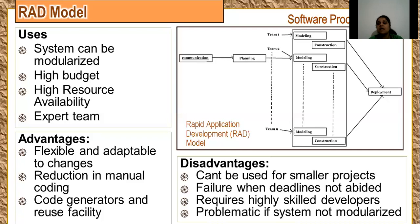The RAD model can be used where the system can be modularized or broken into small sub-tasks; if that is not possible, this model cannot be used. It also requires a very high budget because dividing tasks reduces delivery time. High resource availability is needed — tasks happen in parallel, requiring more infrastructure, manpower, and cost. Last, you need an expert, self-organizing team that is very responsible and does not wait for orders, but takes their responsibilities and works towards progress.